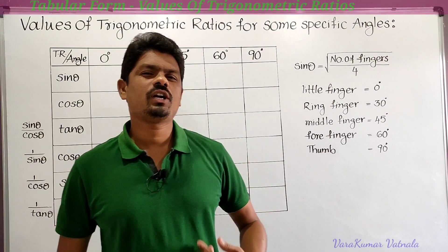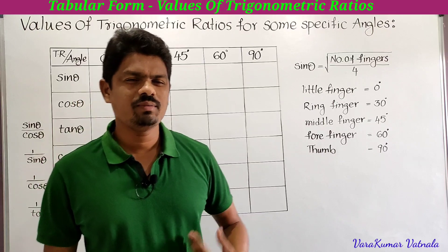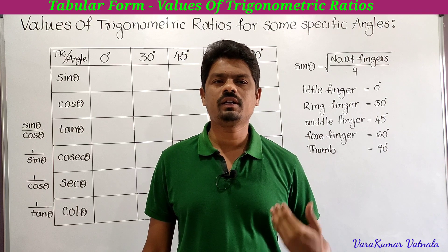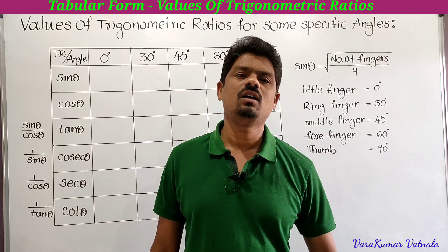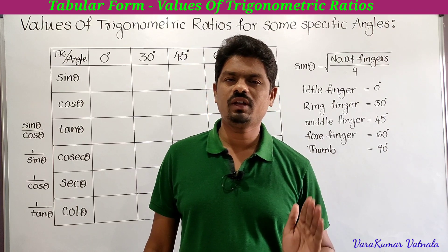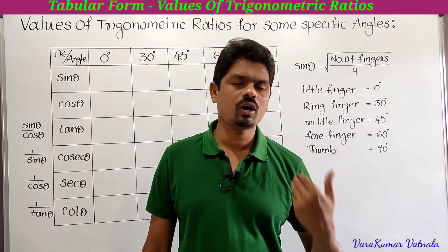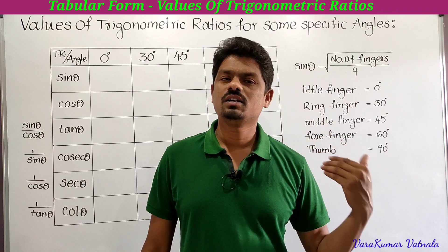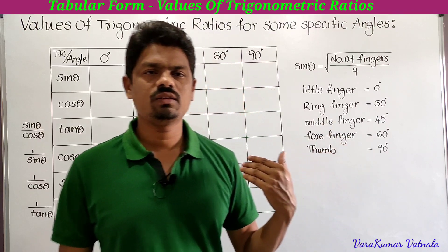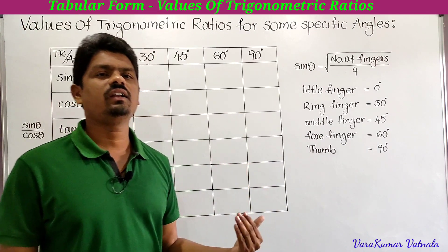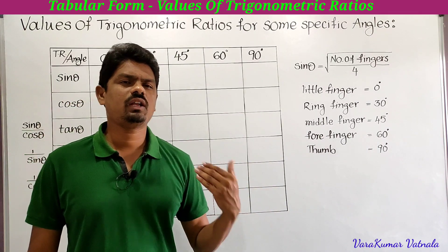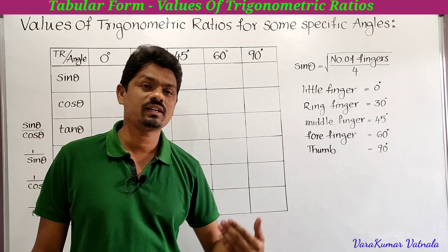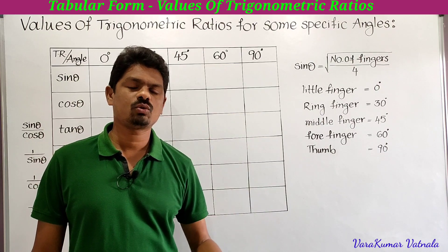Hi, hello, welcome to my channel More Math. My name is Varakumar. Today we are going to learn about values of trigonometric ratios for some specific angles. This is a very important table you have to remember for the specific angles: 0 degrees, 30 degrees, 45 degrees, 60 degrees, and 90 degrees.